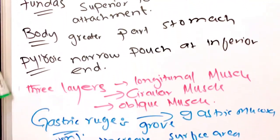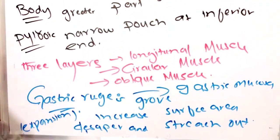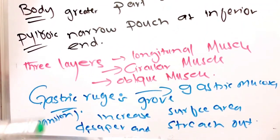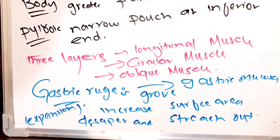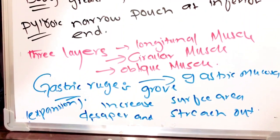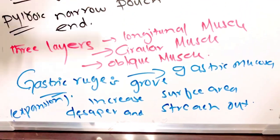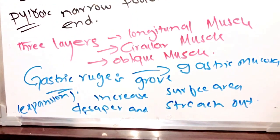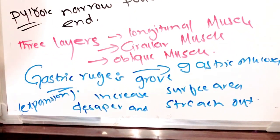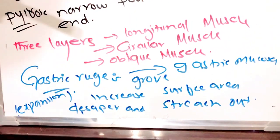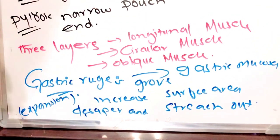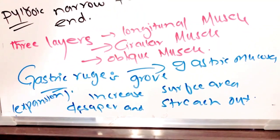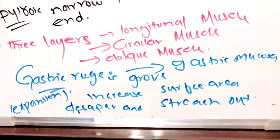The stomach has three muscle layers: the longitudinal muscle layer, the circular muscle layer, and the oblique muscle layer. There is also the gastric ridge, which is like a groove made up of and coiled by the gastric mucosa. It helps the stomach expand and also increases the surface area of the stomach.